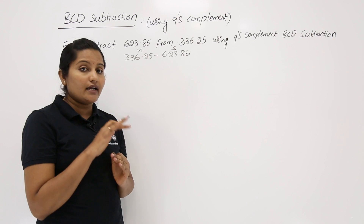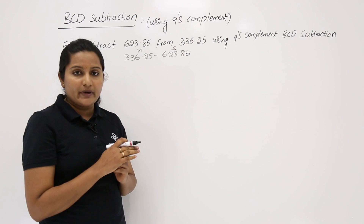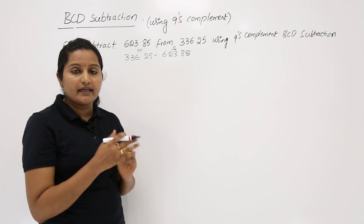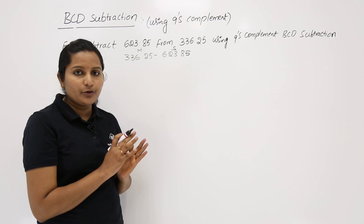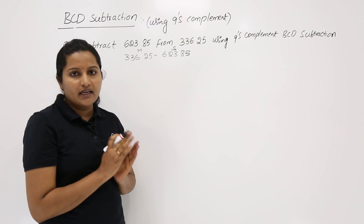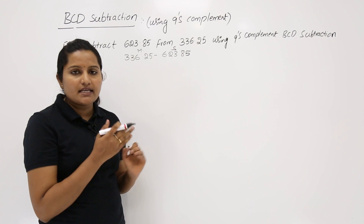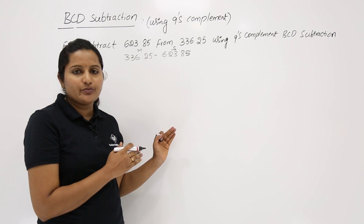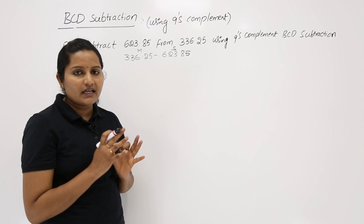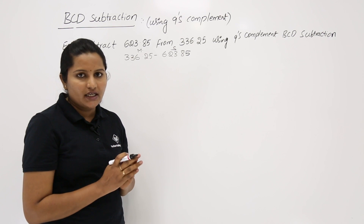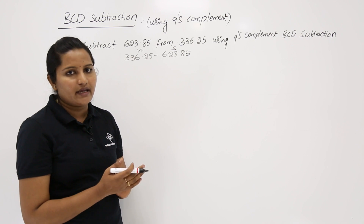If there is an end-around carry after following up the carries, add that carry to the result. If there is no end-around carry — as in the 1's complement process — the result is said to be negative and is in 9's complement form. For cross-checking, you need to take the 9's complement again.